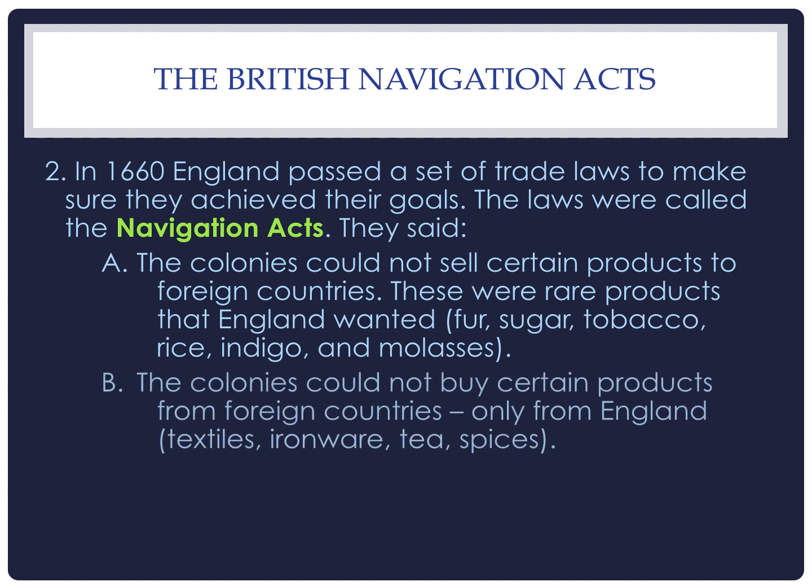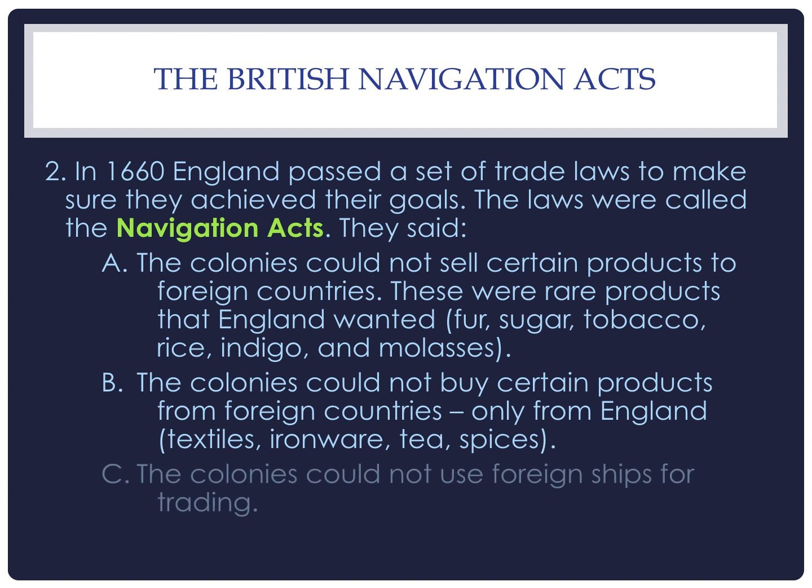The second big part of the law is that the colonists could only buy certain products from England — they could not buy them from foreign countries. Things like textiles, fabric, cloth, ironware, tea, and spices could only be bought from English merchants, not foreign merchants. And the final part is that colonists could not use foreign ships for trading — they had to be British ships.